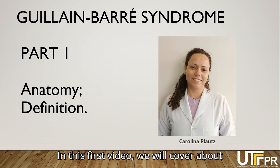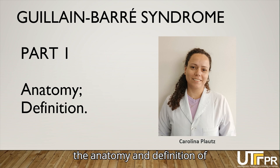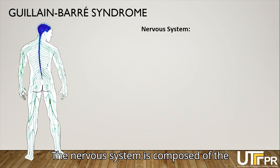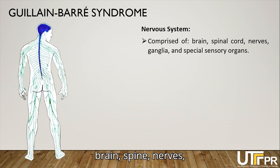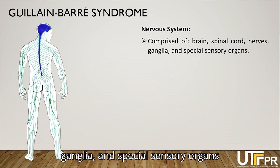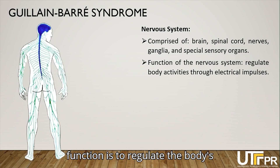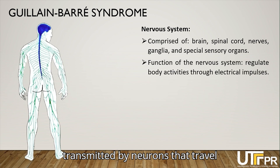In this first video, we will cover the anatomy and definition of Guillabar Syndrome. The nervous system is composed of the brain, spine, nerves, ganglia, and special sensory organs such as the eyes and ears. Its function is to regulate the body's activities through electrical impulses transmitted by neurons that travel through various nerves.